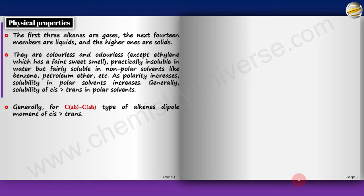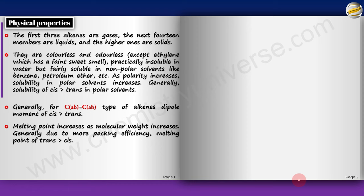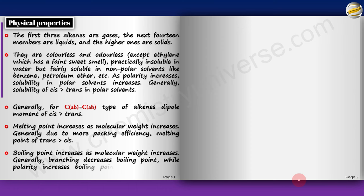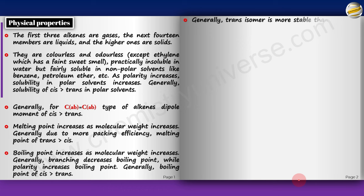The melting point increases as molecular mass increases, and more packing efficiency means more melting point; trans has more symmetry than cis. Boiling point increases as molecular weight increases because that increases the surface area. Branching decreases the boiling point because it decreases surface area, while polarity increases the boiling point. Generally, boiling point of cis is more than trans because of greater dipole moment. Generally, trans is more stable than cis as cis has more steric repulsion.